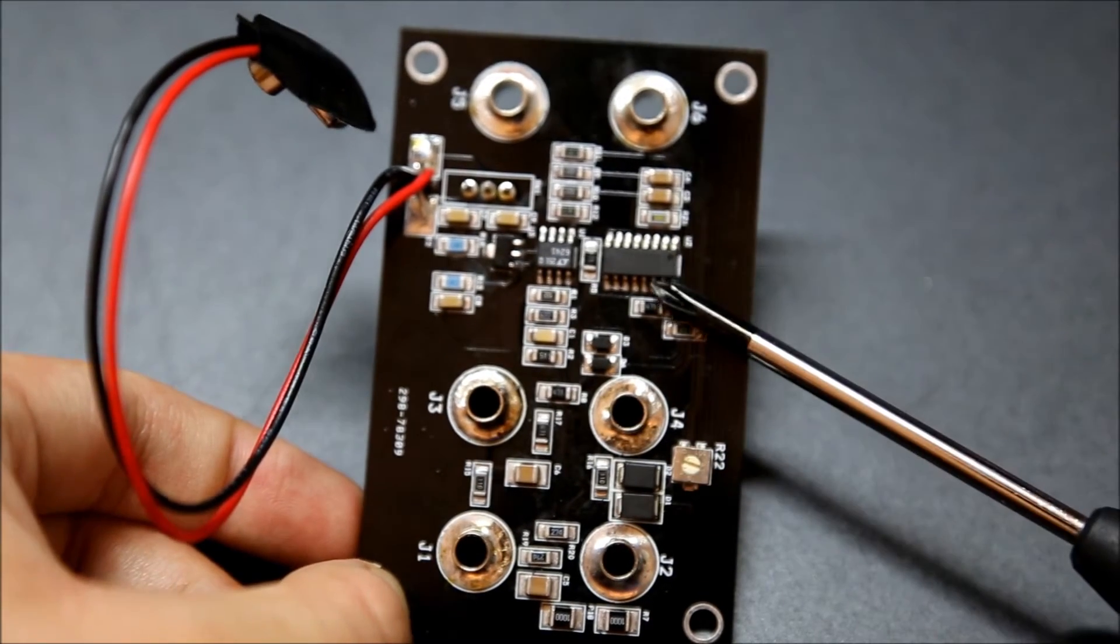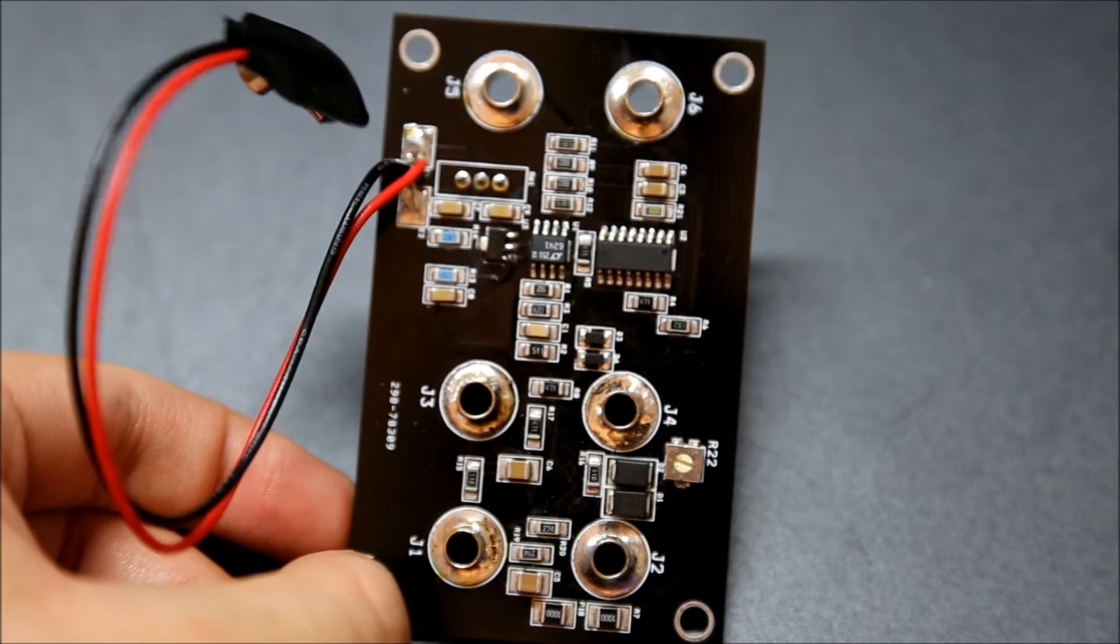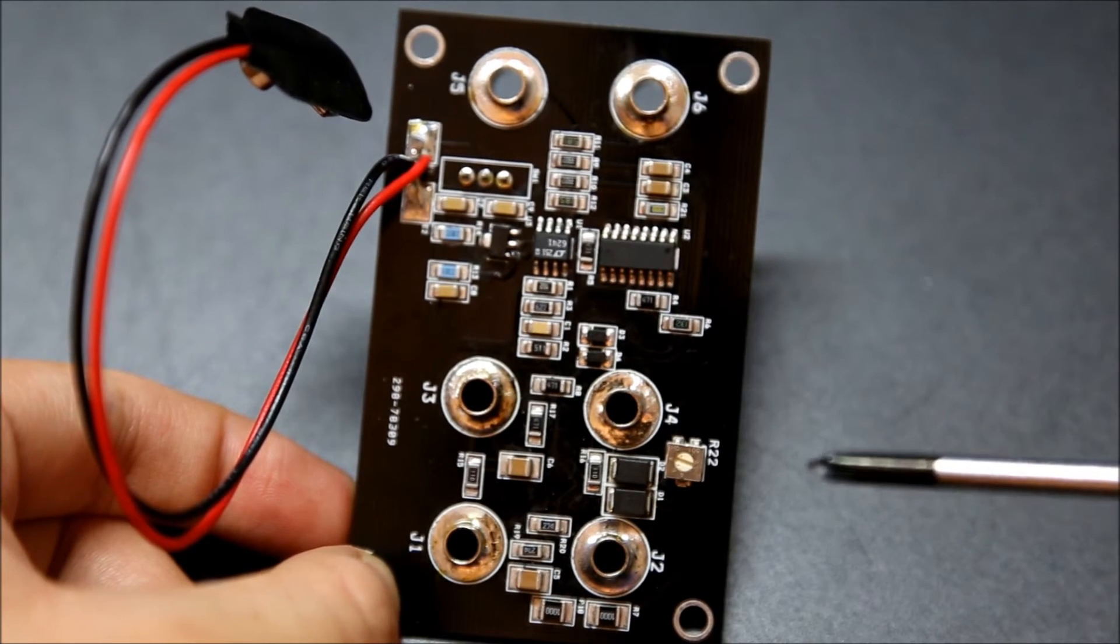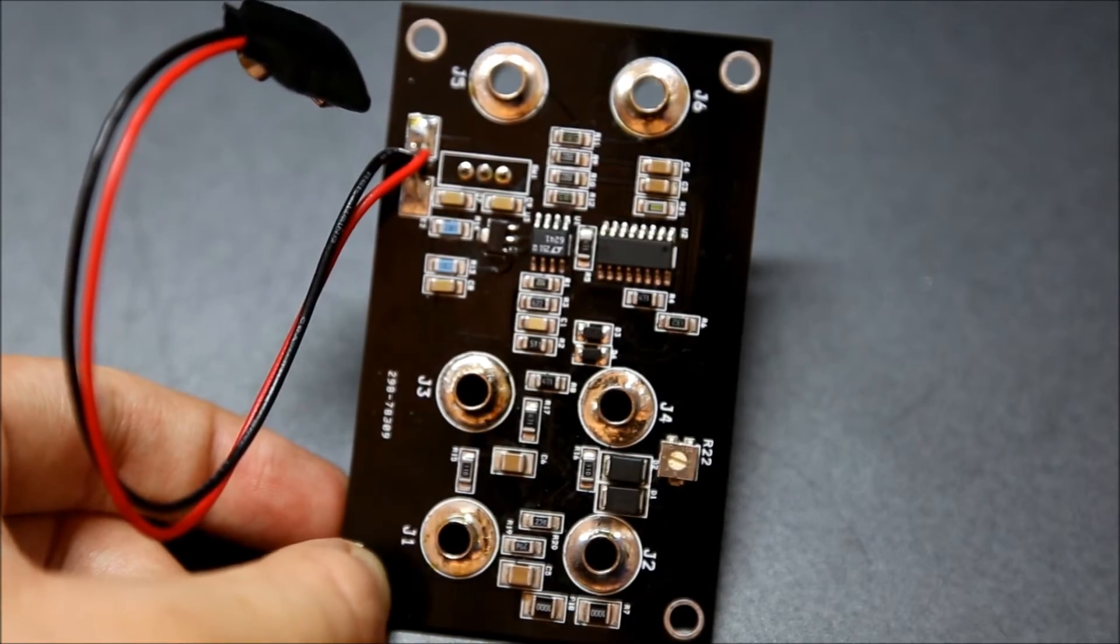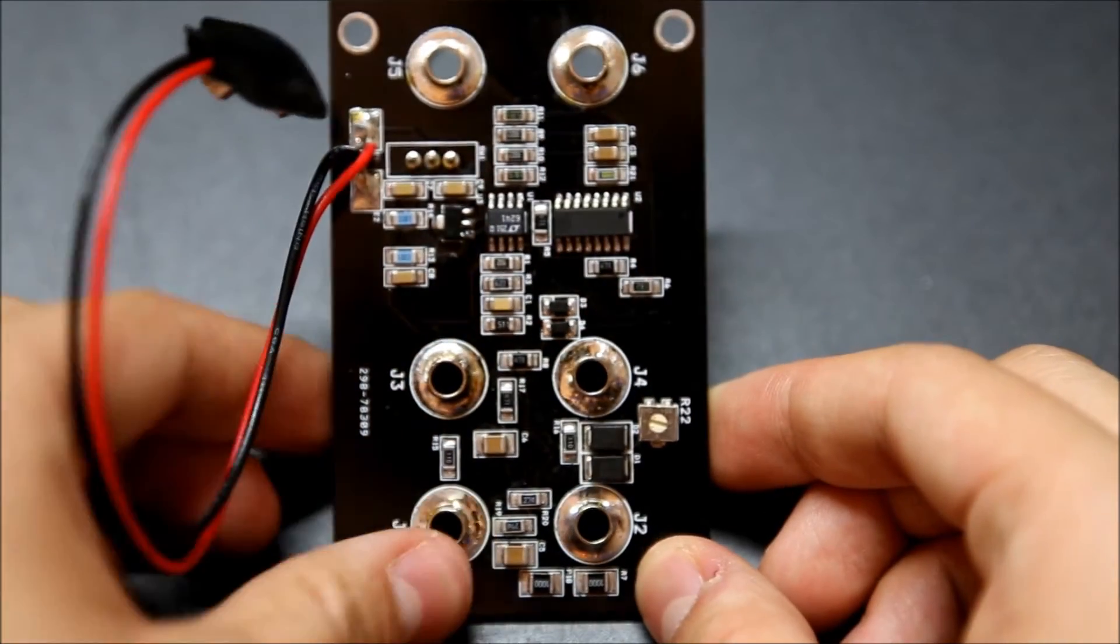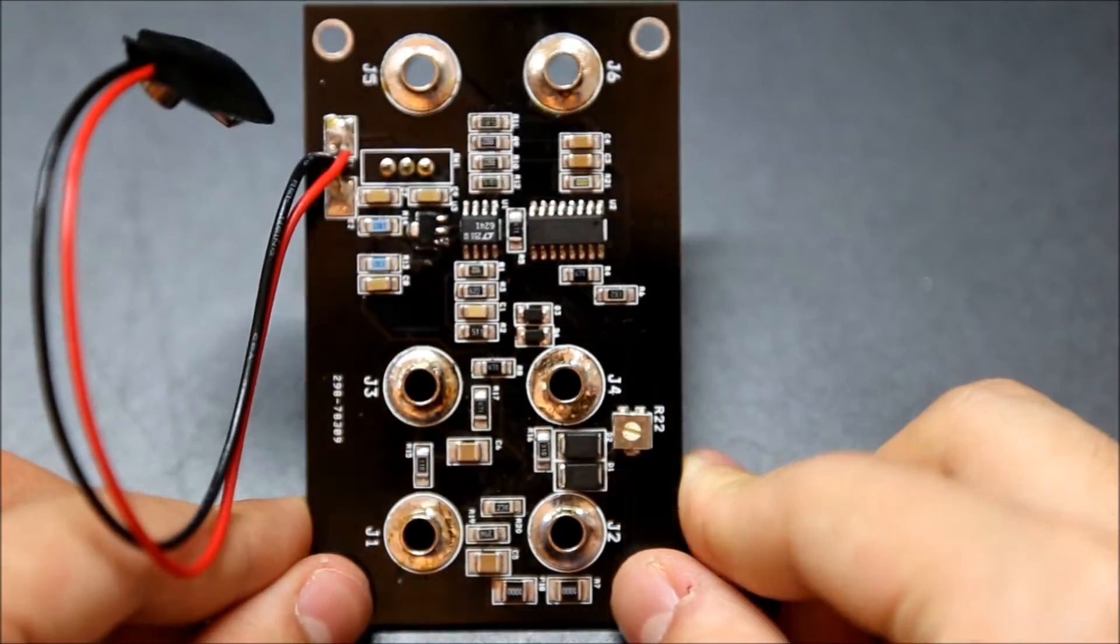Okay, so this chip right here is a 74HC4053. It is a CMOS switch, or multiplexer.